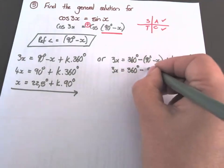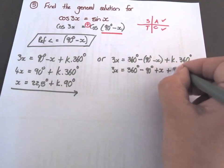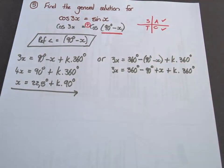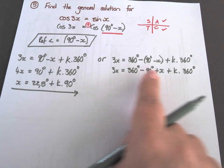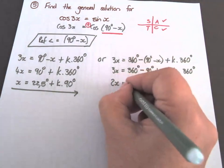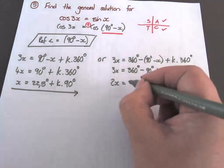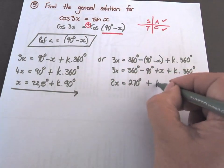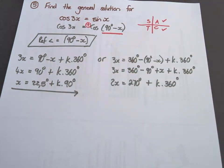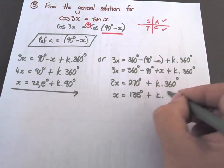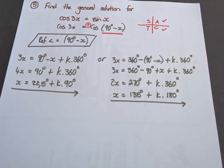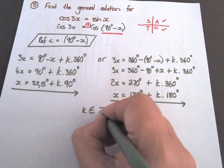For the second solution: x equals 360 minus 90 minus x plus k times 360. Taking x to the left — so it becomes a minus — 3 minus 1 is 2x. 360 minus 90 is 270, plus k times 360. Divide all terms by 2: x equals 135 degrees plus k times 180 degrees. We don't have a range, so we stop there. And k is an element of Z.